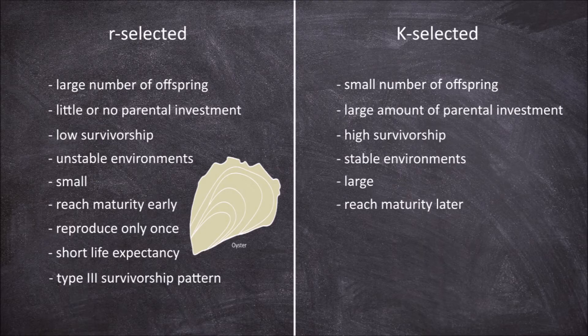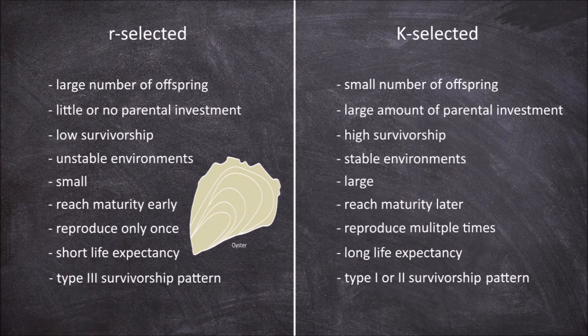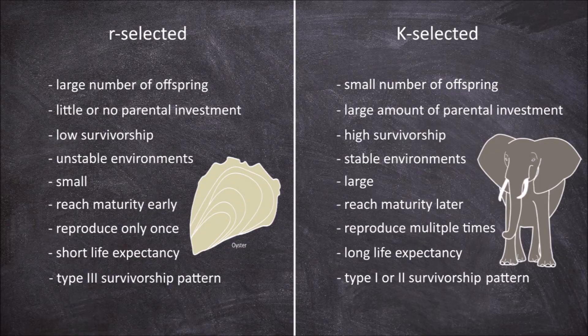K selected species also usually reproduce more than once in their adult lives. They have much longer life expectancies and show a type 1 or type 2 survivorship pattern where individuals usually survive most of their potential lifespan. An example of a K selected species are elephants. They are large and produce usually just a single large offspring, which takes 18 to 22 months depending on the species to gestate inside the mother. It also requires 5 to 10 years of weaning and post-birth parental care, often getting care for up to 16 years. They live long lives and have multiple offspring throughout this long lifespan.